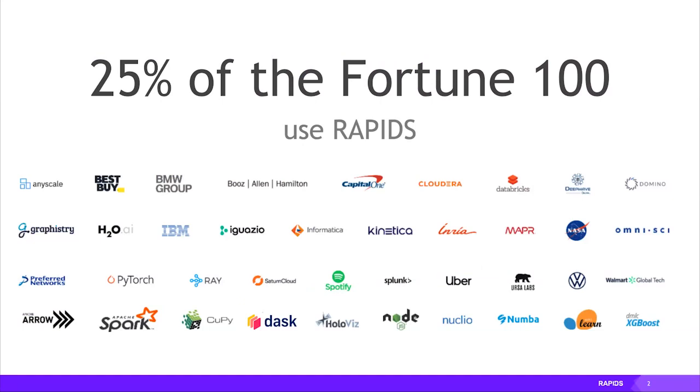We use Dask a lot and our customers use Dask a lot. This talk is about what folks are doing and who's using it. About 25% of the Fortune 100 are using Rapids — a good chunk of them using Rapids and Dask actively, daily, doing real work. NVIDIA typically goes after very large organizations, so that 25% of Fortune 100 number is one people get excited about.